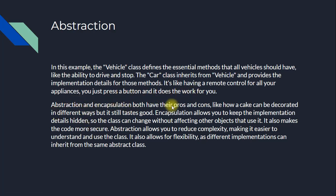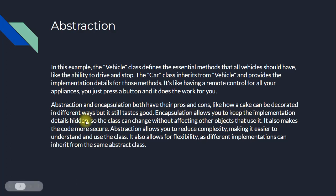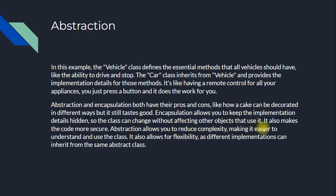Abstraction and encapsulation both have their pros and cons, like how a cake can be decorated in different ways but it still tastes good. Encapsulation allows you to keep the implementation details hidden so the class can change without affecting other objects that use it, and it also makes the code more secure. Abstraction allows you to reduce complexity, making it easier to understand and use the class, and it also allows for flexibility as different implementations can inherit from the same abstract class.